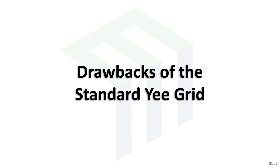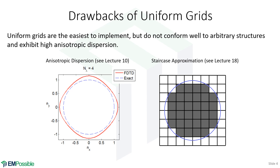Drawbacks of the standard Yee grid. One that we've already sort of alluded to is this idea of numerical dispersion. A wave traveling through a Yee grid travels slightly slower than a physical wave would, and this is particularly bad for waves traveling along the Cartesian axes. These lines are a map of the refractive index as a function of direction. In air, a physical wave would follow this blue line, which is a perfect circle, meaning all directions see the same refractive index. That's not the case for a wave on a Yee grid — it has a slightly higher refractive index, meaning the wave on the grid is traveling slightly slower than the physical wave would. It's worse along the Cartesian axes and least bad along the diagonals, and it's different in different directions — an anisotropic type of dispersion.